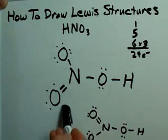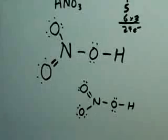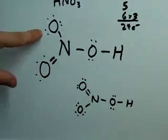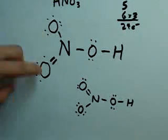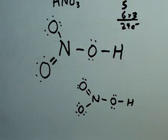We chose to move them from this oxygen here. You could have just as easily chosen for them to come off of this oxygen here, in which case you would get this Lewis structure. These are equivalent Lewis structures, and they are both acceptable.